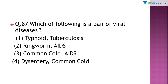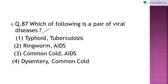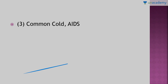Question number 87: 'Which of the following is a pair of viral diseases?' The right answer is option number 3 — common cold and AIDS. Typhoid is caused by Salmonella typhi, a bacterium; ringworm is caused by a fungus; dysentery is caused by amoeba — none of these are viruses. Common cold and AIDS are both viral diseases.